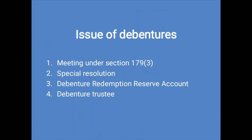Let us see the procedure for the issue of debentures. First, a meeting under Section 179, subsection 3 of the Companies Act 2013 is essential, and a resolution is to be passed. Under Section 71 of the Act, the company can raise funds by issue of debentures. Second, a special resolution is required in the meeting to fix the kind of debenture to be issued and the kind of charge to be given. Third, for the purpose of issuing debentures, it is mandatory for the company to open a debenture redemption account and set aside some money collected by the issue of debentures for the purpose of redemption.